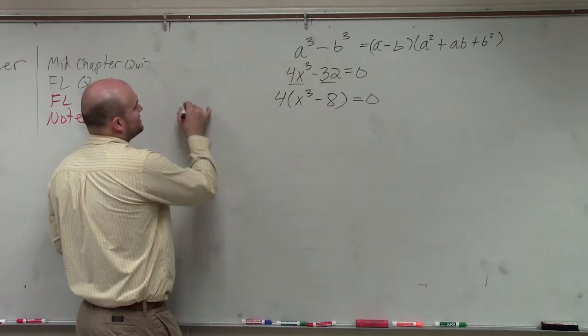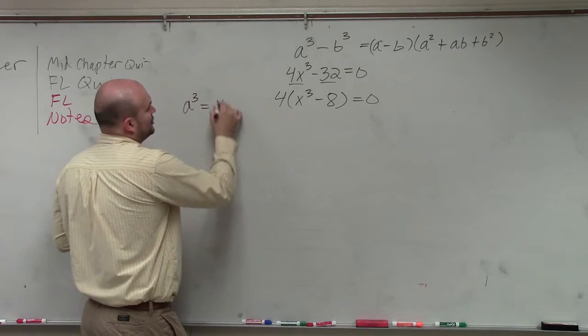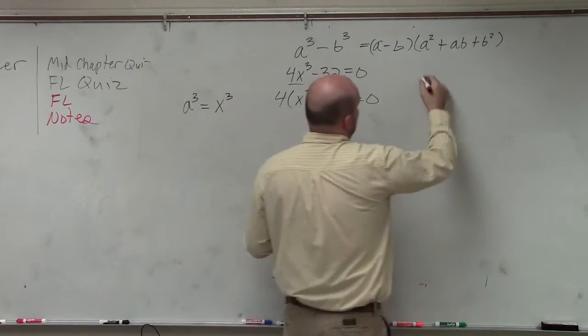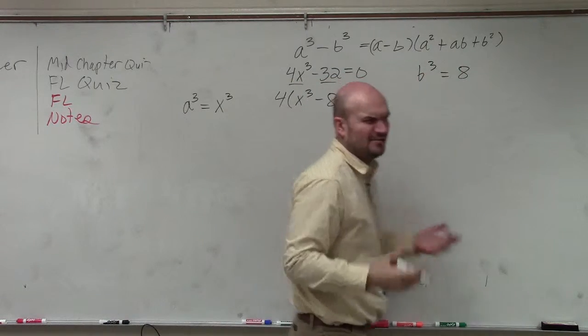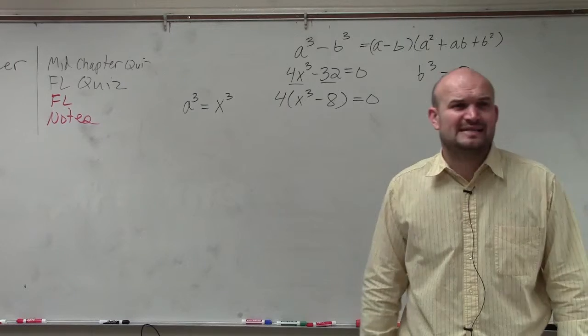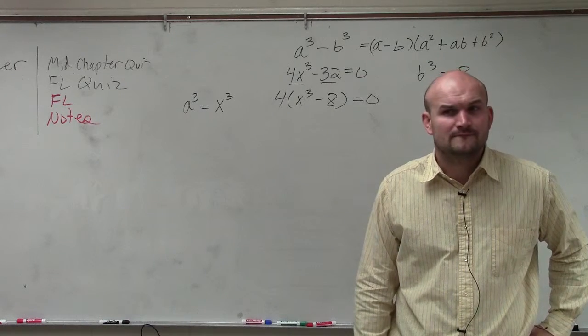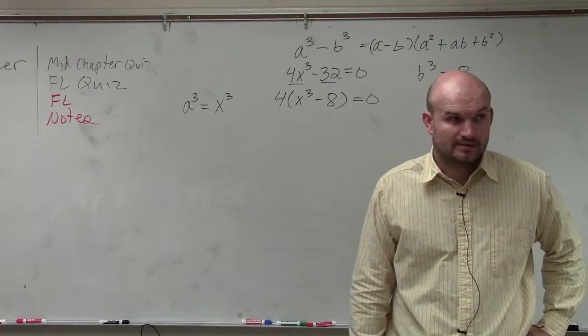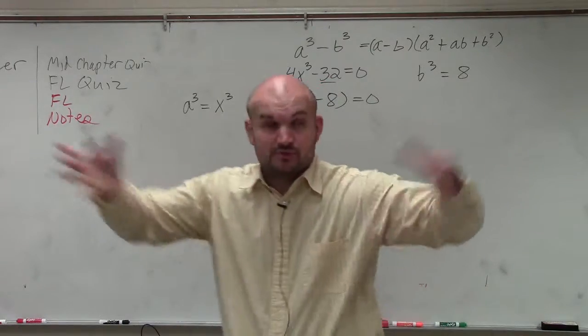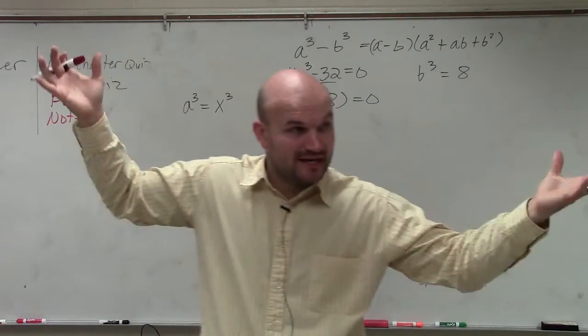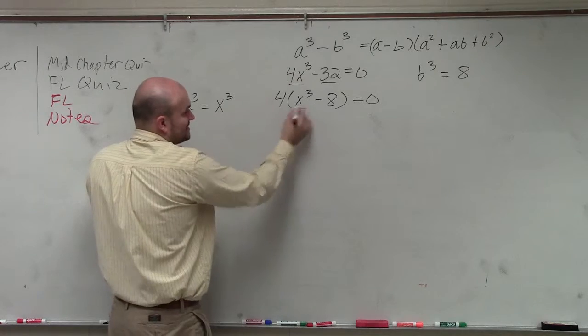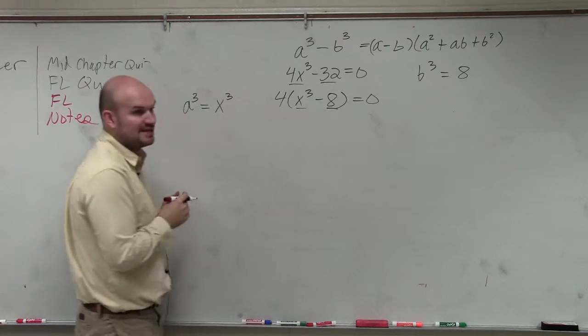So basically, what we want to do then, if we can say that a cubed is x cubed, and we could say b cubed is equal to 8. Does everybody agree with me? Does anybody see why I'm using 8 and not negative 8? It's just a cubed minus b cubed. So we just want to see what is a, and then what is b. So we're saying a cubed is the same thing as this term, and b cubed is the same thing as that term. But the formula talks about a and b.